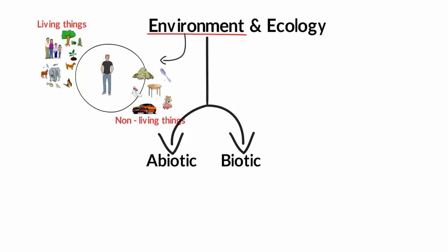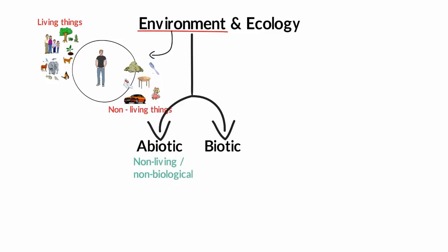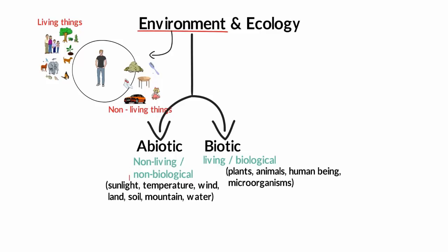Now abiotic refers to the non-biological, non-living component of the environment, such as sunlight, temperature, wind, land, soil, mountain, water, etc. And biotic refers to the biological, living component of the environment, such as plants, human beings, animals, and microorganisms. So abiotic is the non-biological, non-living component part of the environment, and biotic is the biological, living component of the environment.